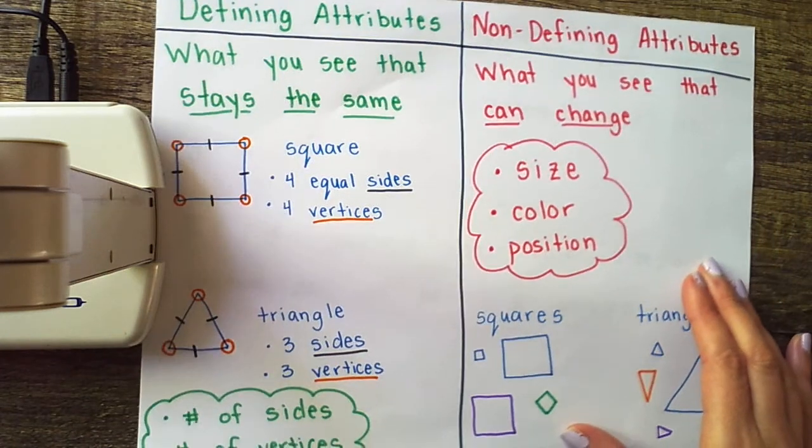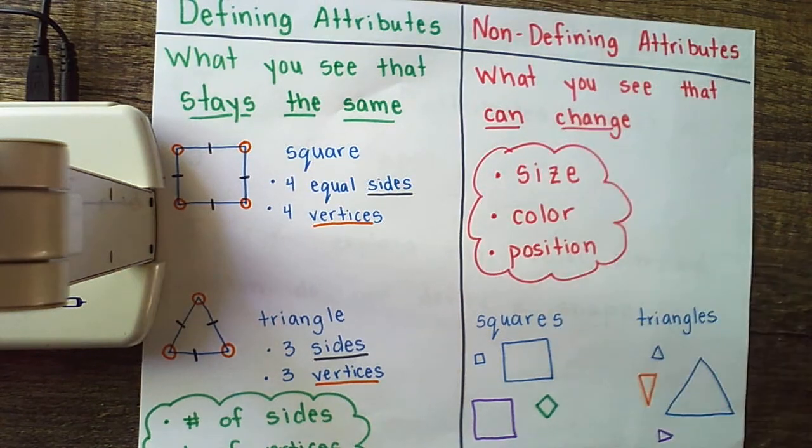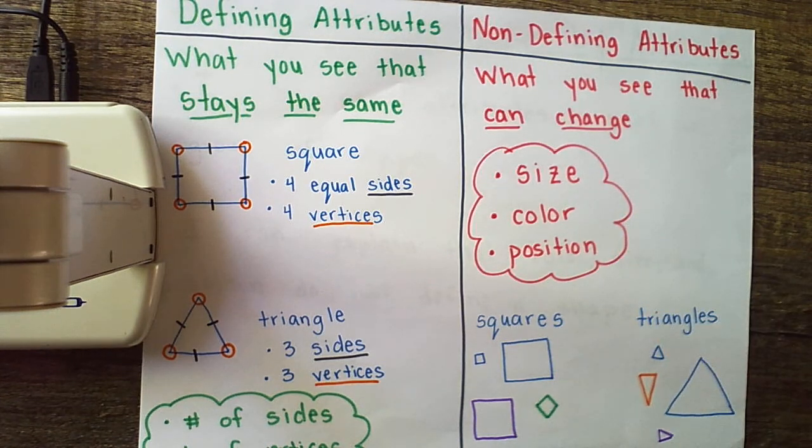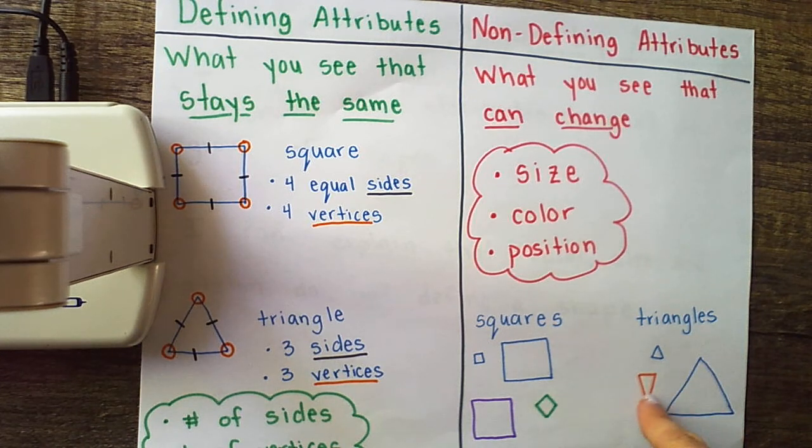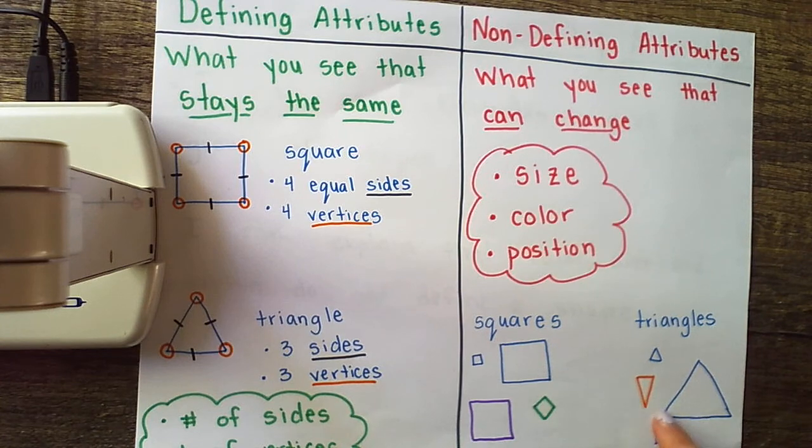Then we talked about non-defining attributes. Non-defining attributes are what you see that can change. That's not going to change what shape you've got. For example, size, color, and position are all non-defining attributes. It doesn't matter if a square is blue, purple, or green. As long as it has four equal sides and four vertices, it's a square. It doesn't matter if our triangle is upside down, little itty-bitty, or big. It's still a triangle if it has three sides and three vertices.